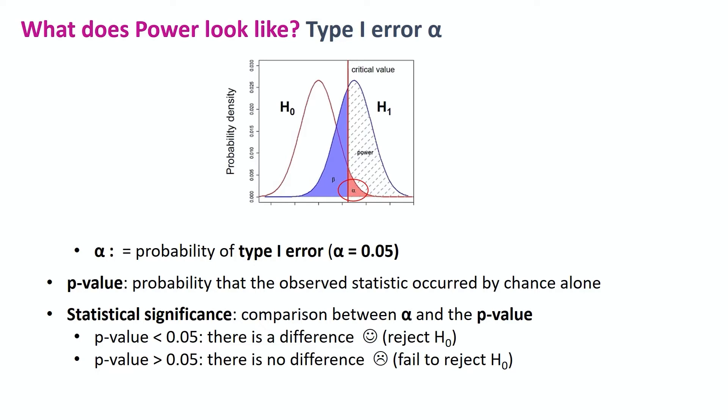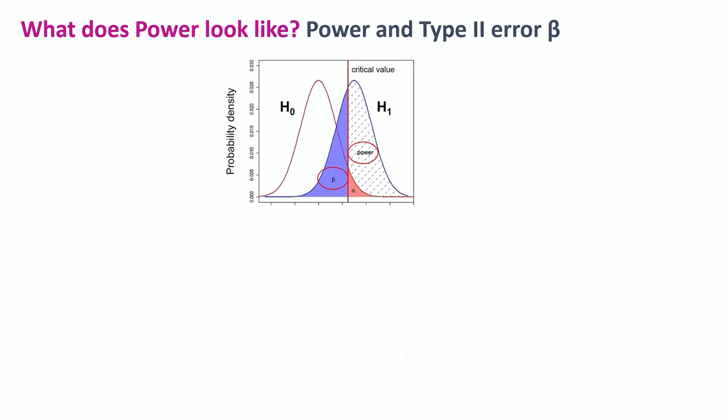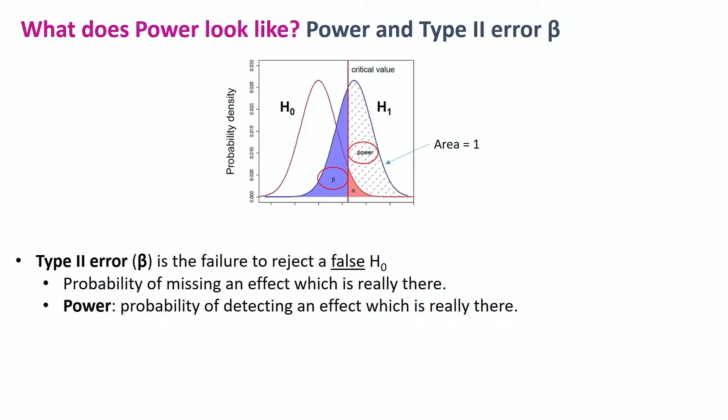Now let's talk about the other type of error, the one we tend to forget, whereas we so should not, the type 2 error beta. Now let's say that the area of the blue curve is 1. We can see that it is partitioned between power and beta. Beta is the failure to reject a false null hypothesis. In other words, it is the probability of missing an effect which is really there. And the power is the probability of detection of an effect which is really there. So we can see how the two are linked.